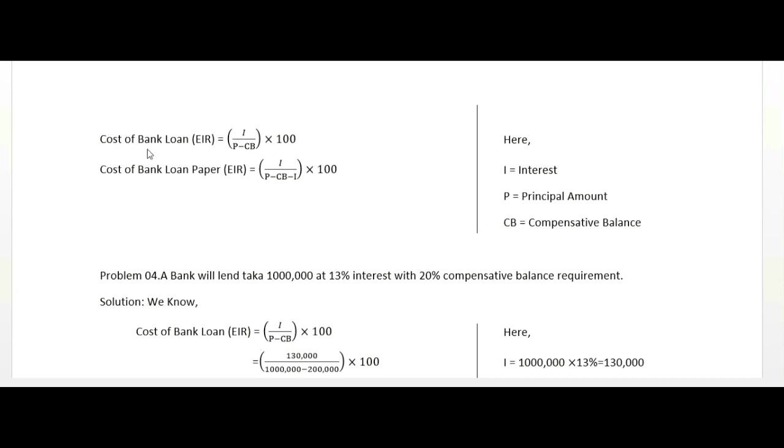The cost of bank loan uses EIR, meaning effective interest rate. The formula is: interest divided by principal amount minus compensating balance, times 100. Where I is interest, P is principal amount, and CB is compensating balance.